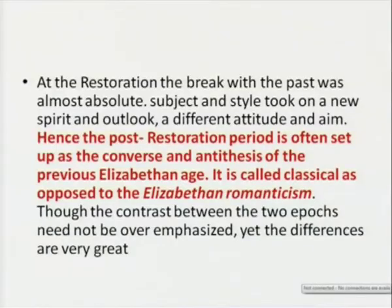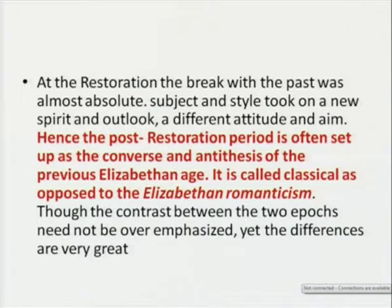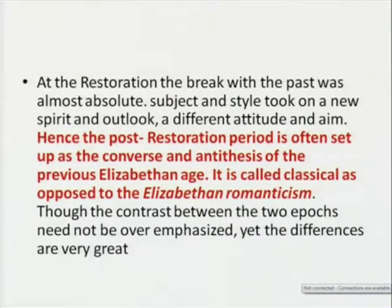At the restoration, the break with the past was almost absolute. Subject and style took on a new spirit and outlook, as Dryden said — he was trying to find out new avenues which would suit the age, a different attitude and aim. Hence the post-restoration period is often set up as the converse and antithesis of the previous Elizabethan stage. It is called classical as opposed to Elizabethan Romanticism. The period which will come just after the Augustan age is also called the Romantic age, but this Romanticism is different from Elizabethan Romanticism. Though the contrast between the two epochs need not be over-emphasized, the differences are very great.